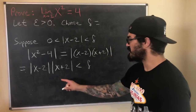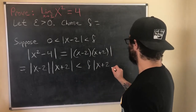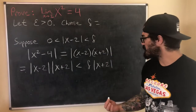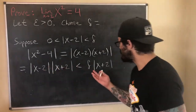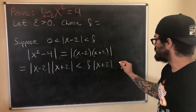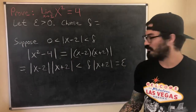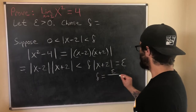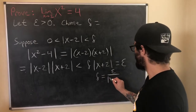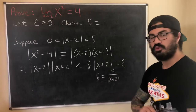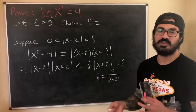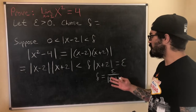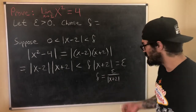My first instinct was to say: we want this to be less than epsilon, so let's set delta · |x + 2| equal to epsilon — exactly how we do it with linear function examples — and divide to get delta = ε / |x + 2|. But the problem is we can't do this, because delta must be a function of epsilon only, not a function of x. We can't have an x variable in our choice of delta. So this does not work.